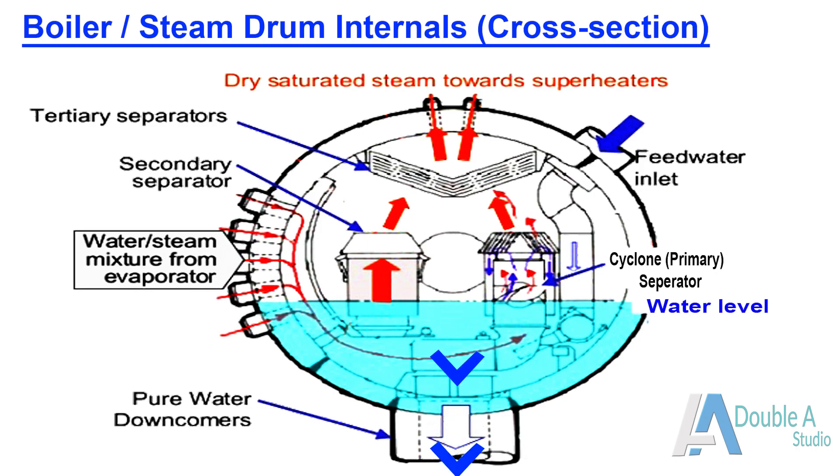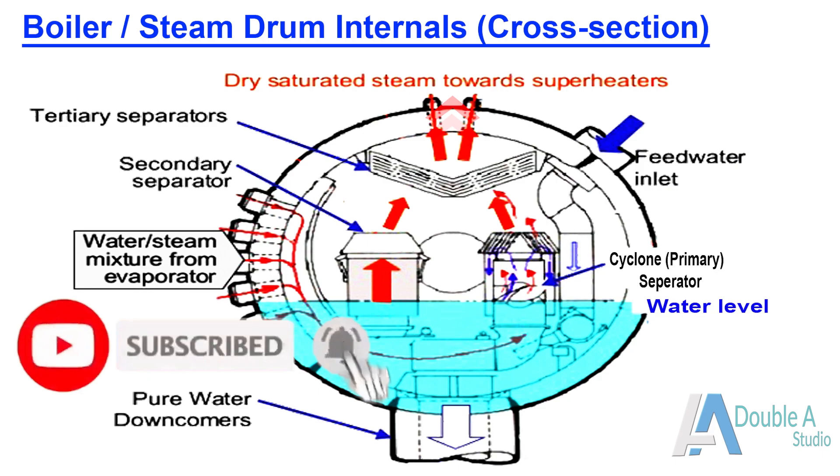Water then falls down into the lower half of the steam drum and goes out through downcomers and begins the circulatory process all over again. Whereas steam comes out from the upper half of the drum and is sent to superheaters for further heating. In our next video we will cover mountings and accessories, so stay tuned.